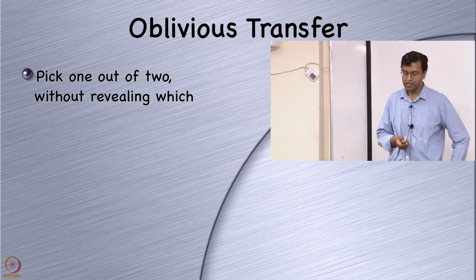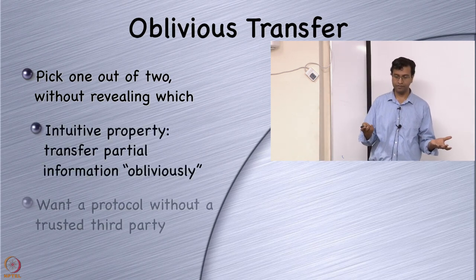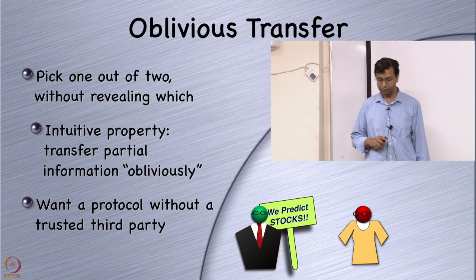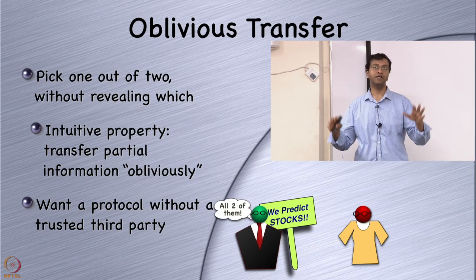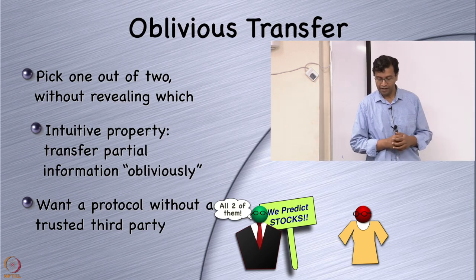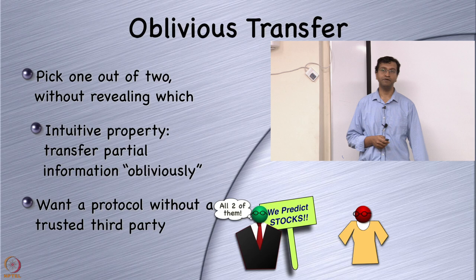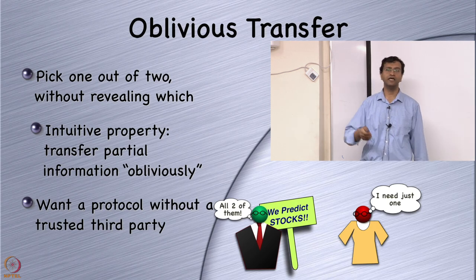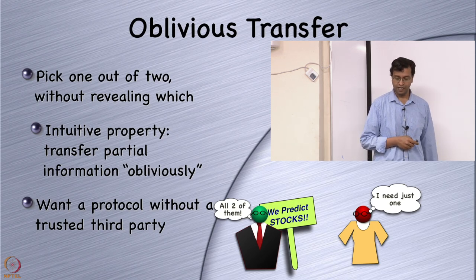What is oblivious transfer? There is a sender and a receiver. The sender has two pieces of data — say two stock price predictions. They sell this service to people investing in stocks. A customer says they only need the prediction for one of these stocks. The seller says which prediction do you want — company A or company B? The investor says they can't tell you which one, because which company they're interested in is private information.